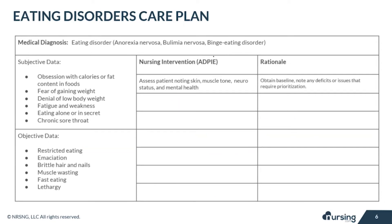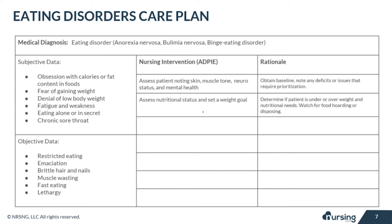For nursing interventions, you should assess the patient, taking notes on their skin, muscle tone, nutrition, neuro status, and mental health to obtain a baseline and identify any deficits or issues requiring prioritization — nutrition is probably the first priority. Assess the patient's nutritional status and set a weight goal to determine if the patient is underweight or overweight, and watch for food hoarding or disposal of food, as these patients can be very strategic.